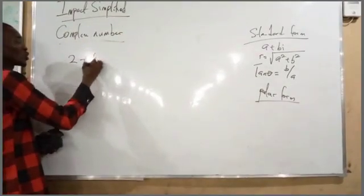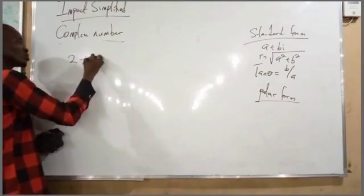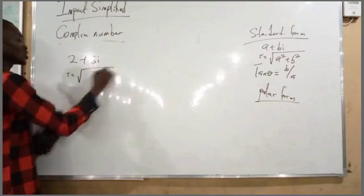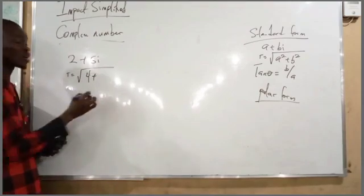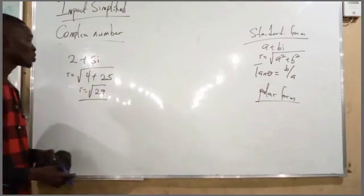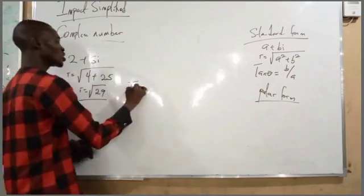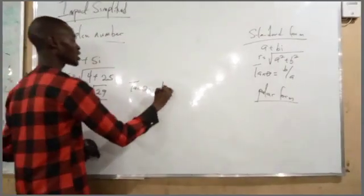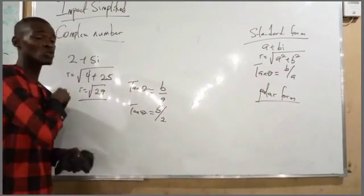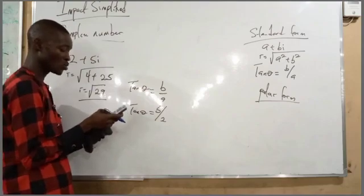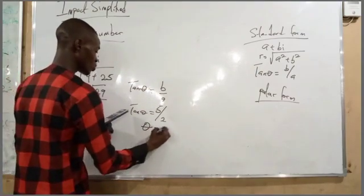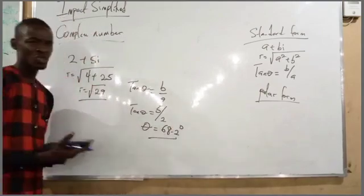For 2 plus 5i, find the magnitude and direction. The magnitude R equals the square root of 2 squared plus 5 squared equals the square root of 4 plus 25 equals the square root of 29. For the direction, tan θ equals b over a equals 5 over 2, so θ equals the tan inverse of 5 over 2, which gives approximately 68.2 degrees.